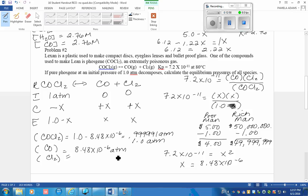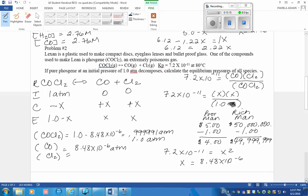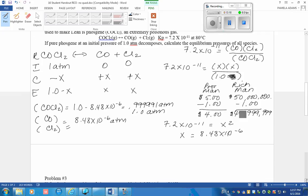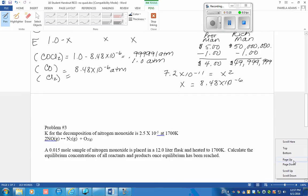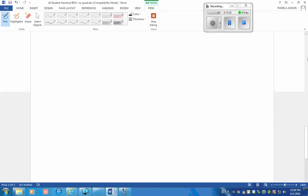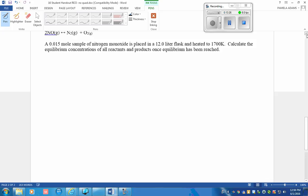Now, how do you know when you're allowed to drop this X? My rule of thumb is any K value that is smaller than whatever the coefficient is times 10 to the negative 5 is okay to drop. Make sure you just drop that X where you're supposed to.